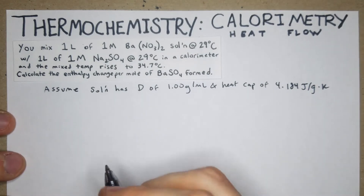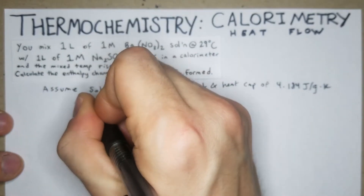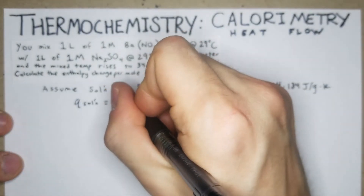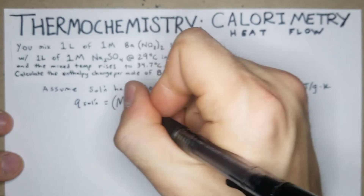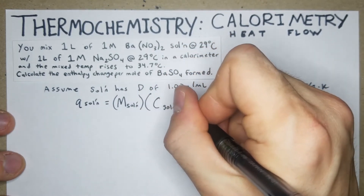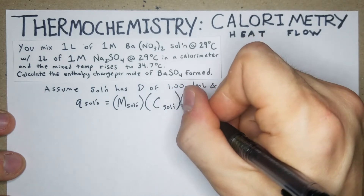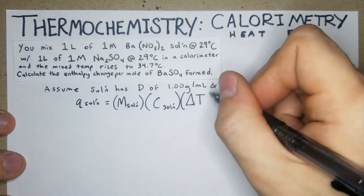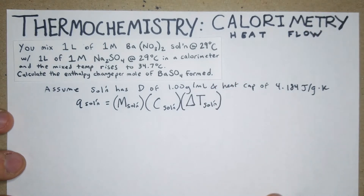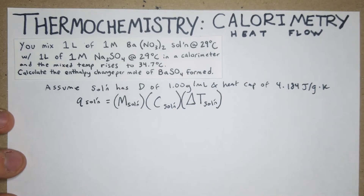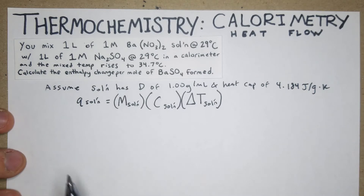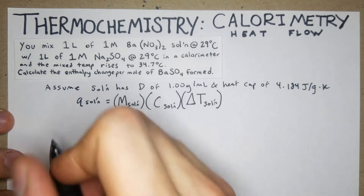We're going to use q of the solution = m_solution × c_solution × ΔT_solution. It seems monotonous to write 'solution' each time, but it's relevant — this is a mixture, a solution, so we should treat it as such.